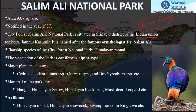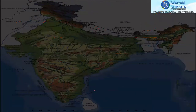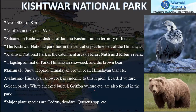The vegetation of Salim Ali National Park is coniferous alpine, with major species including Cedar and Deodar. Mammals present include Hangul, Himalayan Serow, black bear, musk deer, and leopards. The avian fauna includes the Himalayan Monal, Himalayan Snow Cock, and Swamp Francolin, giving the park its unique specialized representation.